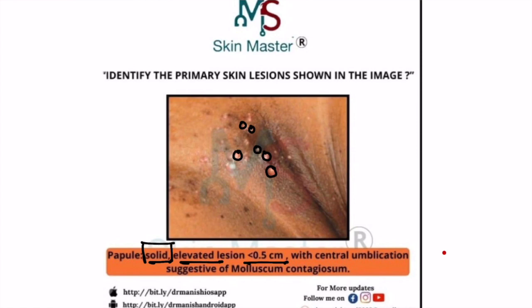And if you closely see these lesions, which can be done with the help of a hand lens, you will find central umbilication. And this central umbilication is very characteristic of a condition known as molluscum contagiosum. So these are the lesions of molluscum contagiosum and the primary skin lesion here is papules.